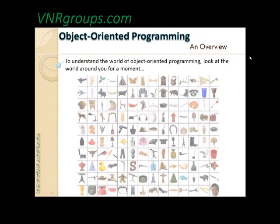If you see the real world around you, you'll see a lot of objects. There is also a topic called the object-oriented thought process — there are a couple of books available on this topic, especially 'Object-Oriented Thought Process.' The thought process is that whenever you write a program, you think of the program as a real-time mapping to real-world objects.